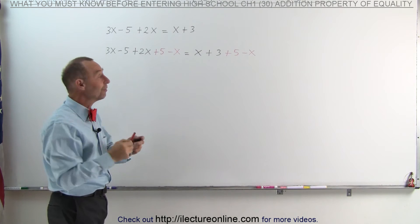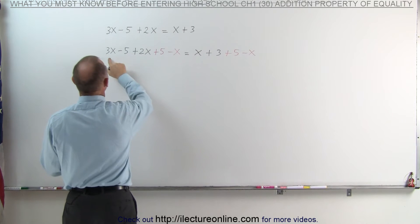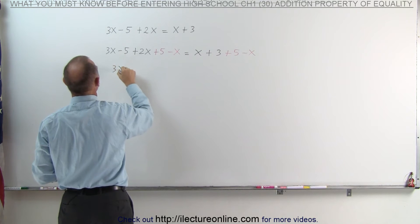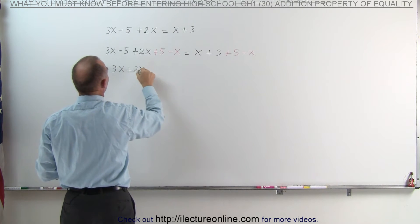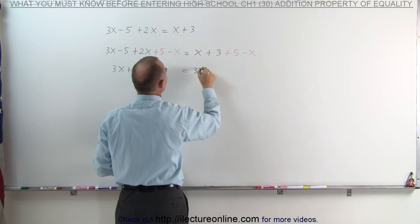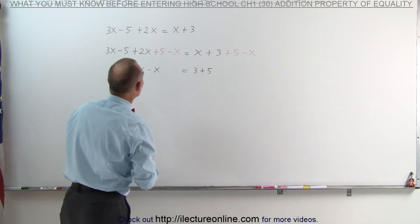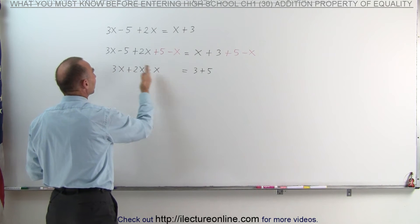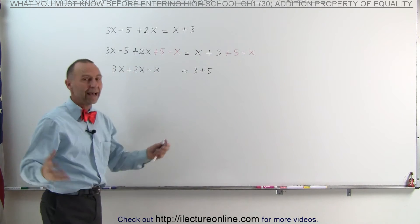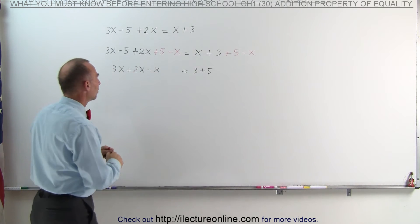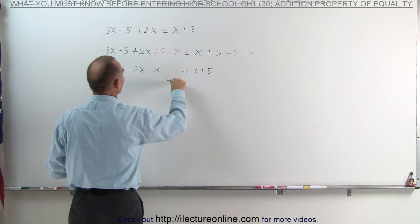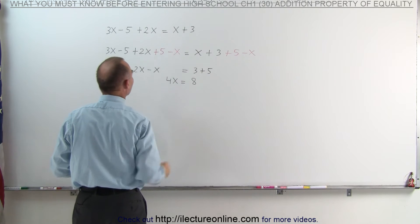Now when I simplify, I get the following. The minus 5 plus 5 disappears, so on the left side I end up with 3X plus 2X minus X. On the right side, the X's disappear and I end up with 3 plus 5. Notice all the terms with the variable X are now on the left side, and all the numbers without an X are on the right side. Combining like terms: 3X plus 2X minus X is 4X. So 4X equals 3 plus 5, which is 8.